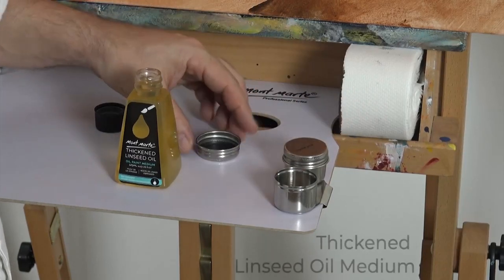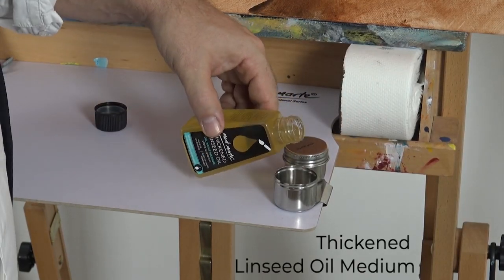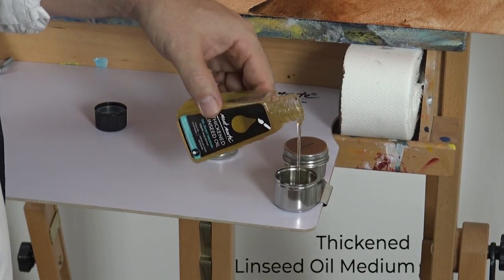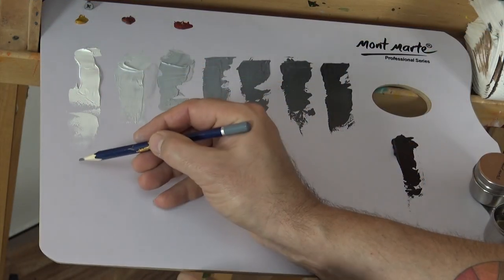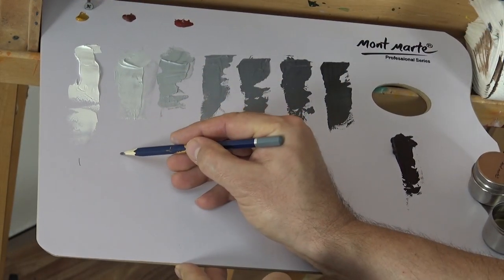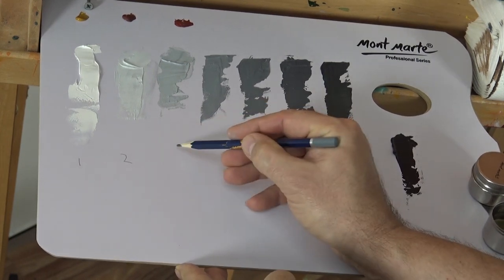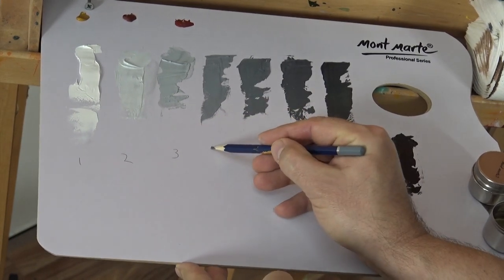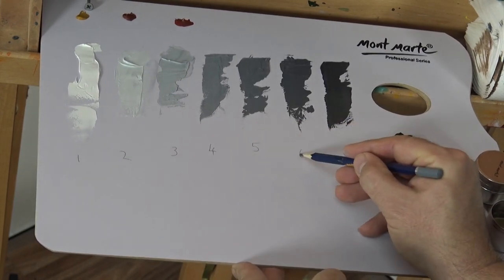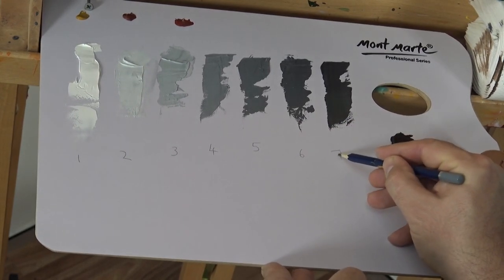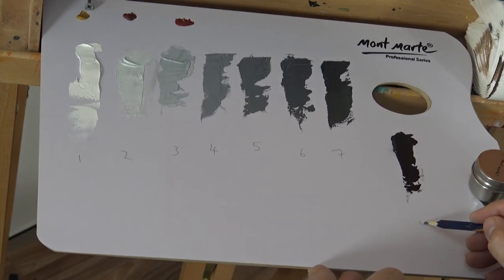I then pour out some thickened linseed oil medium to create tones for the grisaille. A grisaille is an underpainting of grey values. I lay out some titanium white and darken it with additions of mars black so I have eight steps moving up in contrast, with step one titanium being the lightest and step eight being pure mars black, with six steps in between.